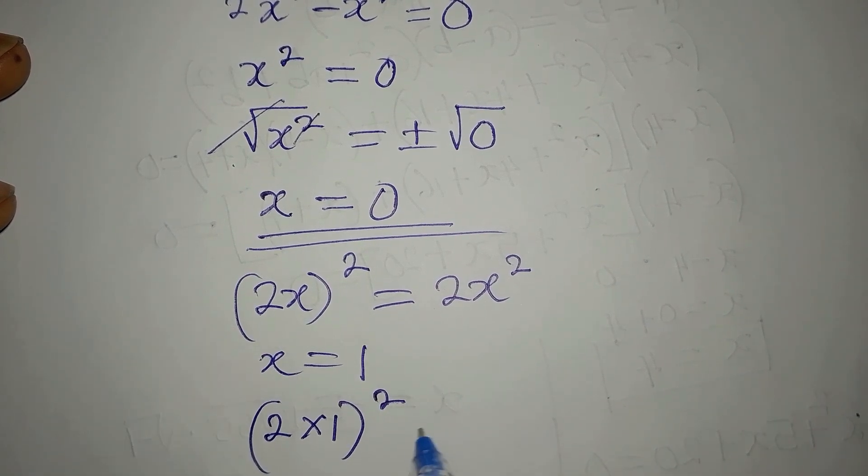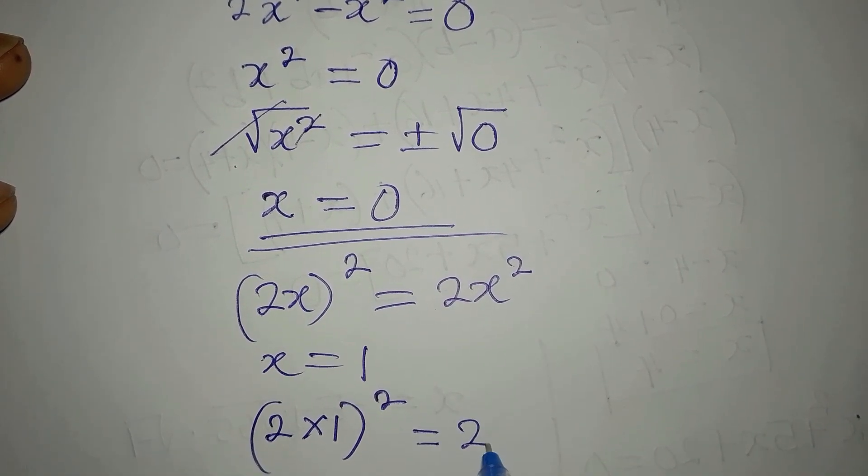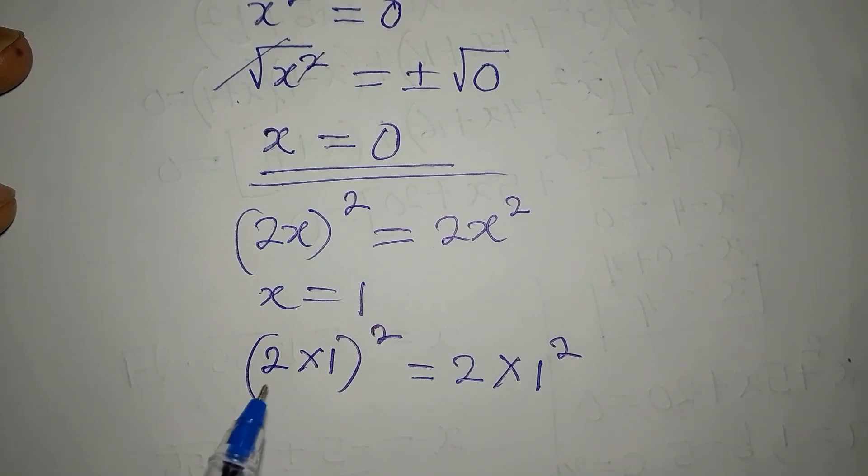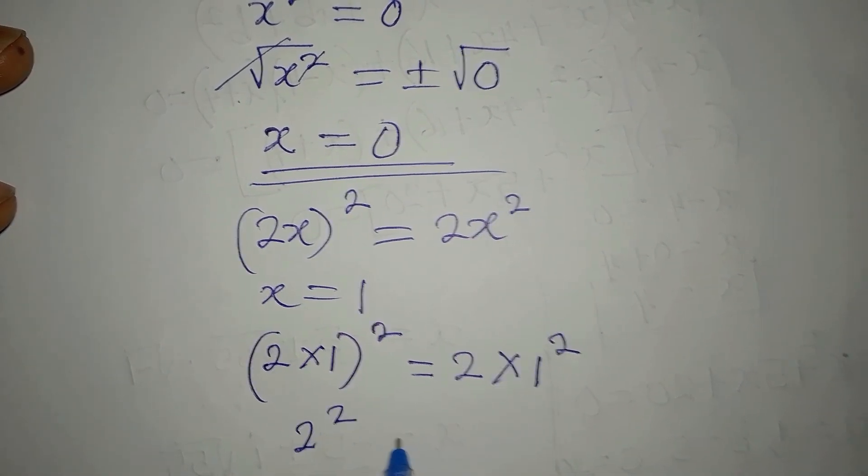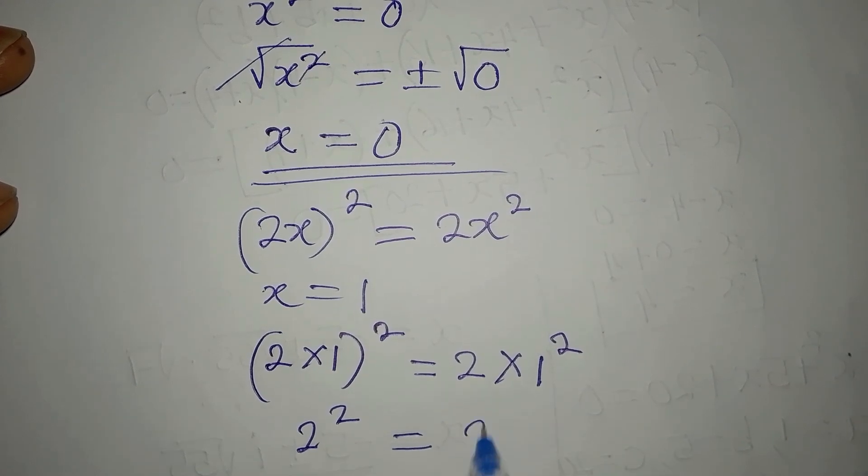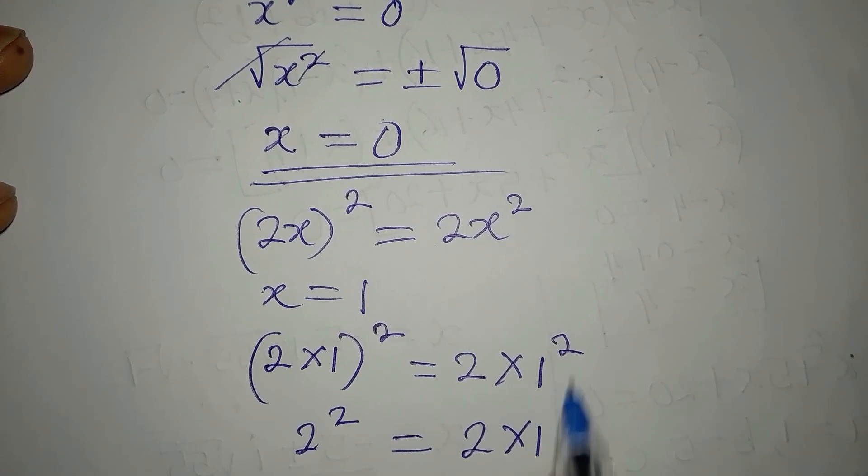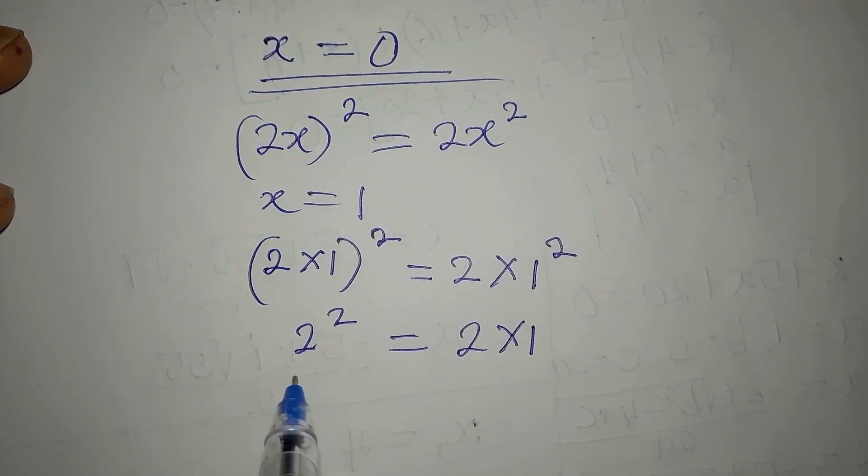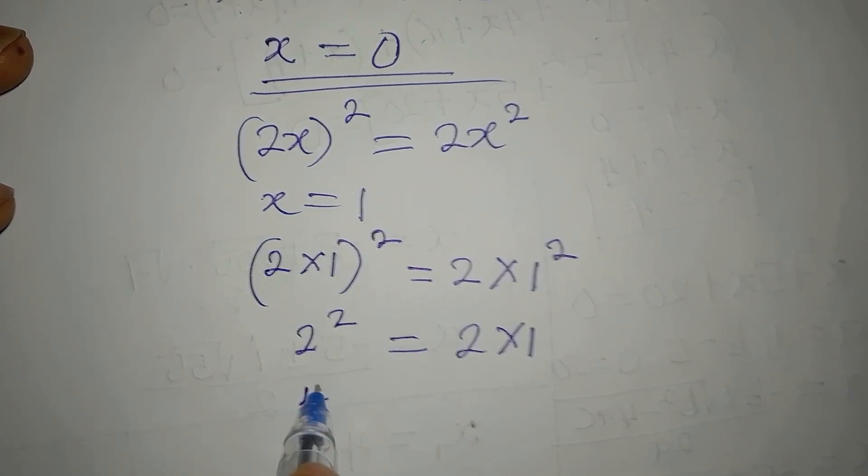2 times 1 is 2, squared. And then on the other side, this is 2 times 1, because 1² is one. Then we proceed from here. 2 to the power of 2 is 4.